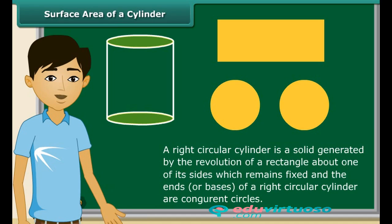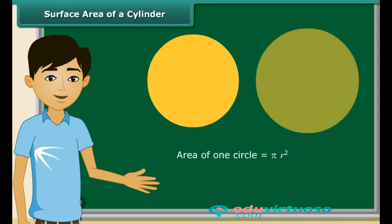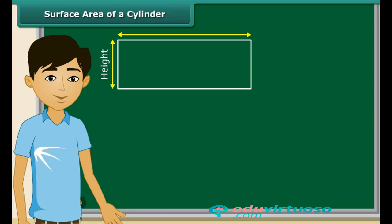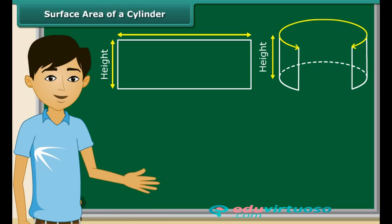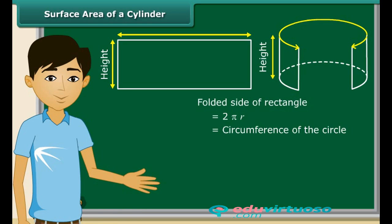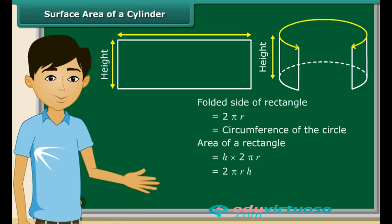To find the total surface area of a cylinder, we must calculate the area of the two bases and the rectangle. The area of one circle is πr², so for two circles you get 2πr². As the rectangle is folded, one side becomes the perimeter of the resulting circles, so the folded side equals 2πr, which is the circumference of the circle. The area of the rectangle is h multiplied by 2πr, equal to 2πrh.